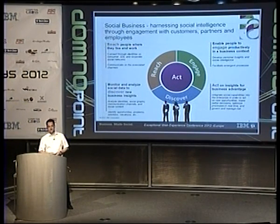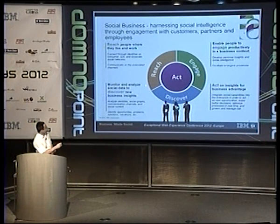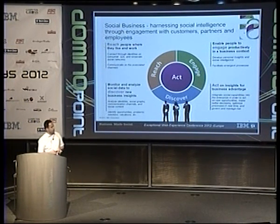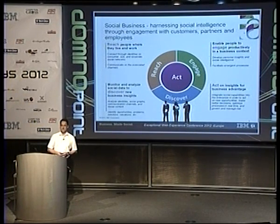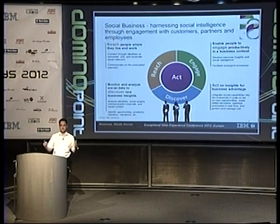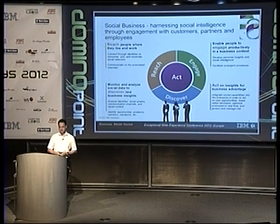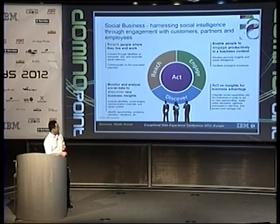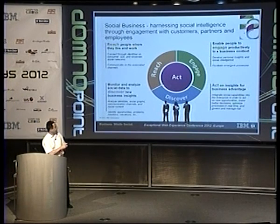In IBM we have identified a couple of key priorities for social business. One is establishing reach — to reach the people you want to interact with: your employees, business partners, and customers. Then the next point is to engage them: once you've reached them through whatever channel, it's very important to have an engaging user experience and get customers, partners, and users to participate, contribute, and give feedback so that information can flow both ways and a dialogue can be established. Then it's very important to discover what those people are really interested in and what's important to them, so that you can act in a very decisive way based on facts and insights.